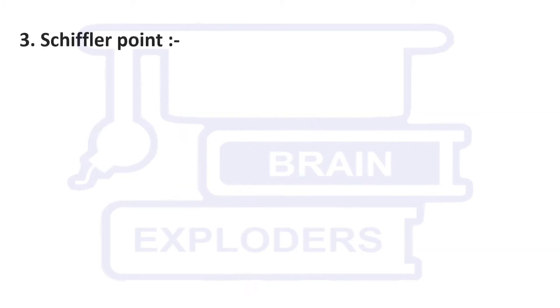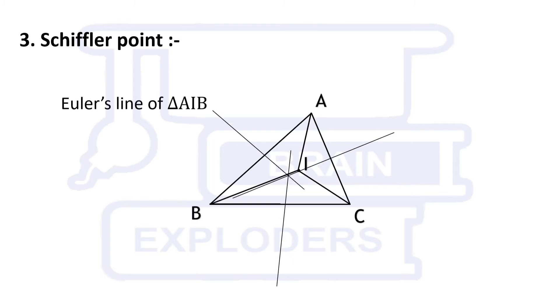Schiffler Point. Draw the incircle I of the triangle ABC. Euler's lines of triangle AIB, BIC, and CIA are concurrent and the point of concurrence is called Schiffler Point.